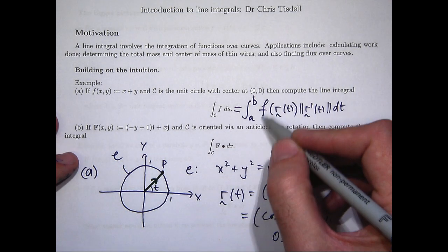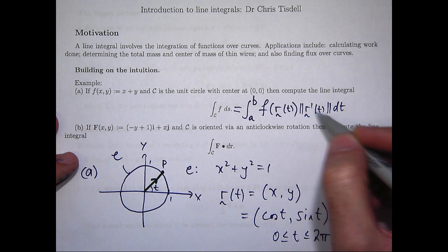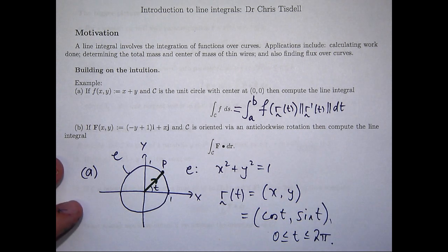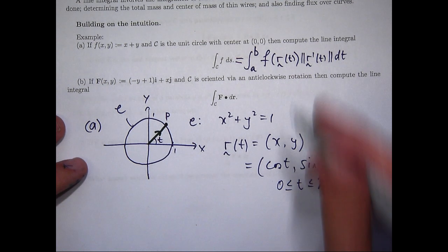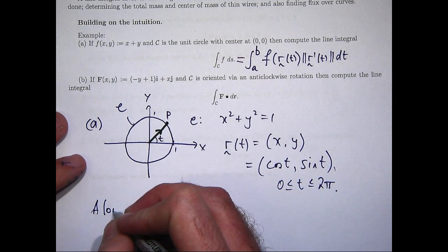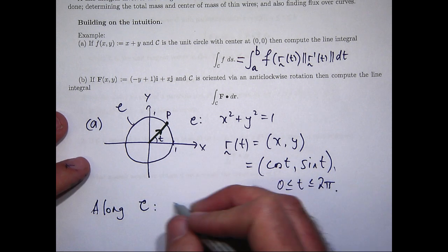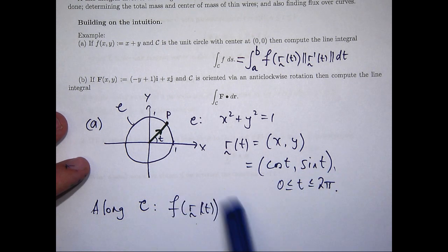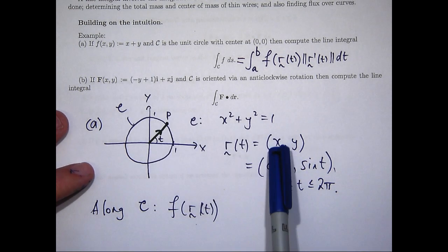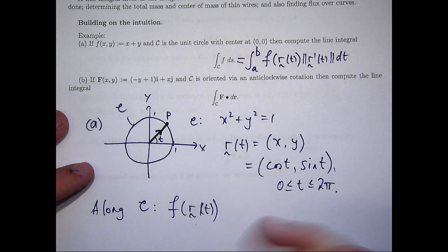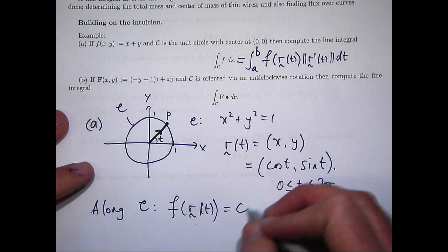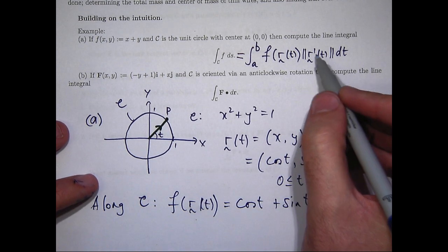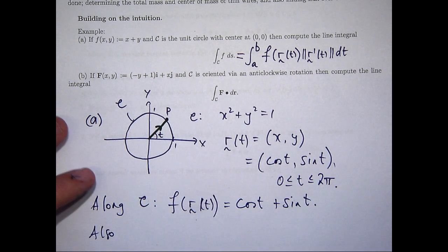So, what do I need? Well, I want to evaluate f along my parameterization and multiply through by the magnitude or the length of this derivative. Okay, well, along my curve, all I really do to work out this is let's go up and replace x with cos t, y with sin t. So, I'm going to get cos t plus sin t.